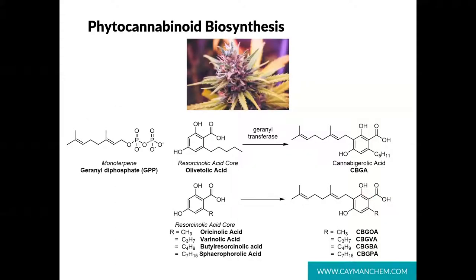I want to start today's discussion with a focus on phytocannabinoid biosynthesis. The cannabis plant uses biosynthetic pathways to generate several structurally diverse phytocannabinoids. These pathways share in common the condensation of geranyl diphosphate with a resorcinolic acid core to provide cannabigerolic acid, or CBGA. For this presentation, I will be focusing on resorcinols with a five-carbon chain, which is the olivetol series. Alternative alkyl chain lengths of one, three, four, and seven carbons, corresponding to the Orson, Varin, Butyl, and Farnesyl series respectively, are also known. The unknowns and chemistry I discuss today can be applied to all of the varying chain length phytocannabinoids.